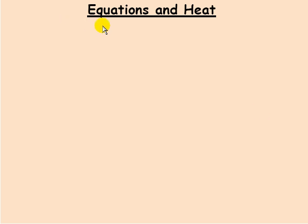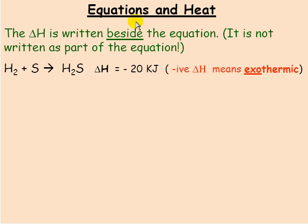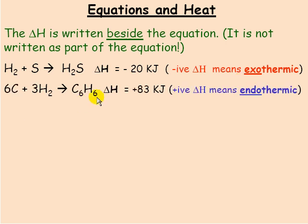Let's look at how enthalpy and heat are represented in chemical equations. In one type of equation, the delta H is written beside the equation — it's not really part of the equation; there's no plus sign between them. If delta H is negative, it means enthalpy is going down, and this is an exothermic reaction. If delta H is positive, it means it's an endothermic reaction.